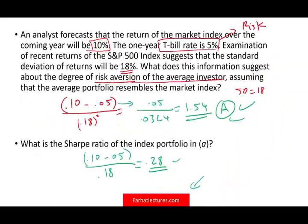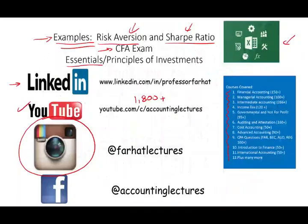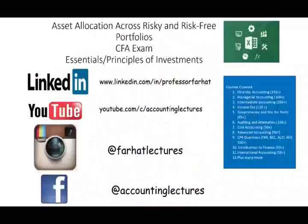Hopefully these exercises help you understand risk aversion and the Sharpe ratio. Check the description for the playlist link. In the next session, we will start to look at asset allocation across risky and risk-free portfolios. Now that we've explained risk premium, risk aversion, how to measure the price of risk, and the Sharpe ratio, we are ready to build a portfolio and allocate assets between risk-free and risky assets based on your risk tolerance.